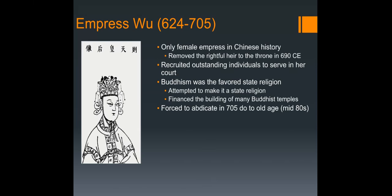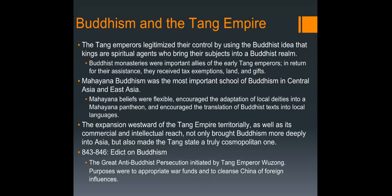Empress Wu financed the building of many Buddhist temples, but in her mid-80s she was forced to abdicate around 705 CE due to old age. Keep in mind: she removed the rightful heir in 690 and stepped down in 705, meaning she would have been in her late 60s or early 70s when she actually overthrew an emperor. Quite remarkable.